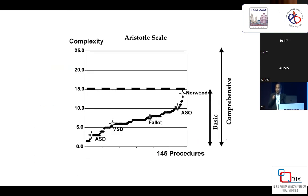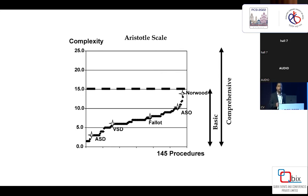The Aristotle has two scores. The Aristotle basic complexity score evaluates only the procedure's complexity, with a point system ranging from 1.5 to 15, divided into four levels. On screen, you can see: ASD scores around 2, VSD around 6, Tetralogy of Fallot around 7.5, arterial switch around 10, and Norwood — at the maximum — scores 15. They divided this into four levels of difficulty from level one to level four, where level four is Norwood.